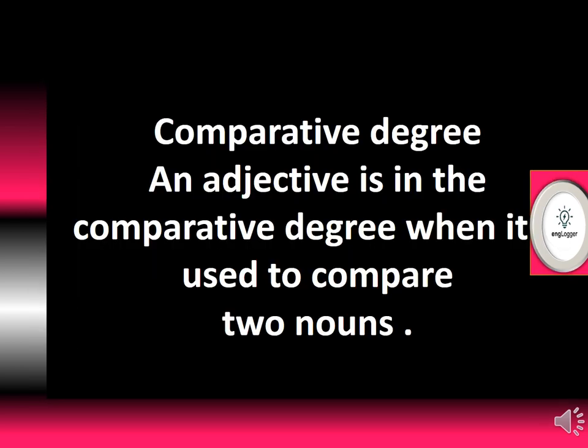Next, we have the definition of comparative degree. When we are making comparison between two things or two persons — or a set of persons or things — it denotes a higher degree of quality. For instance: 'cleverer'. In positive it was 'clever', and now in comparative it becomes 'cleverer'. ER has been added, and that shows that we are doing comparison between two persons.